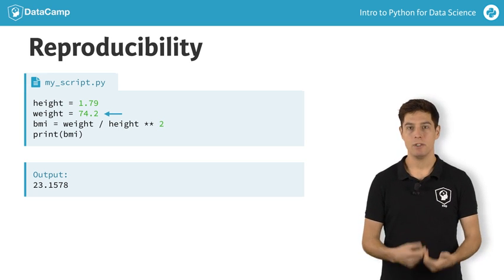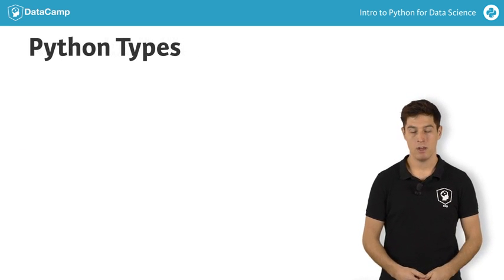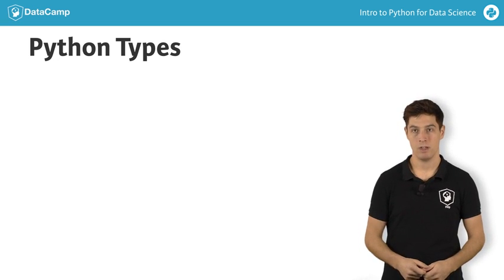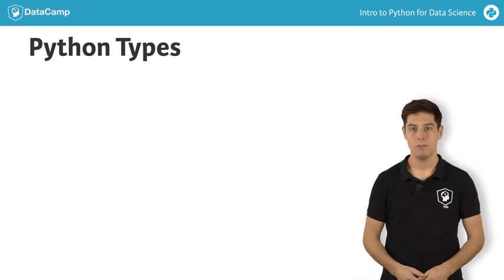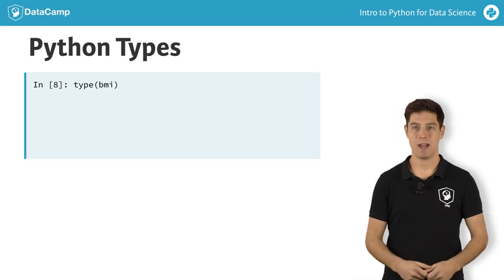You can check out the type of a value with the type function. To see the type of our BMI value, simply write type and then BMI inside parentheses.